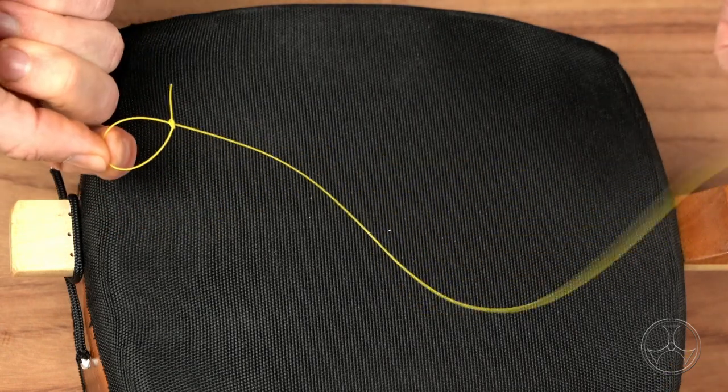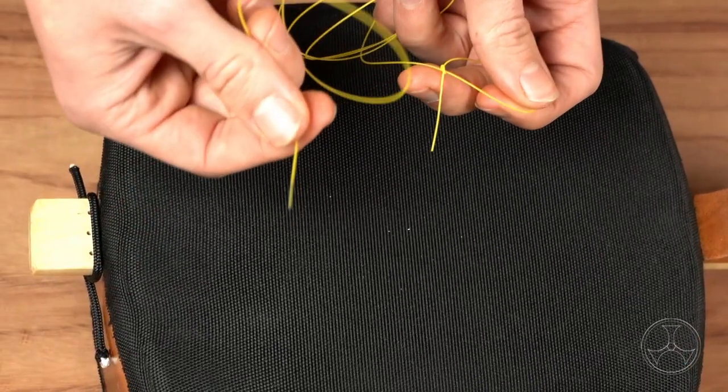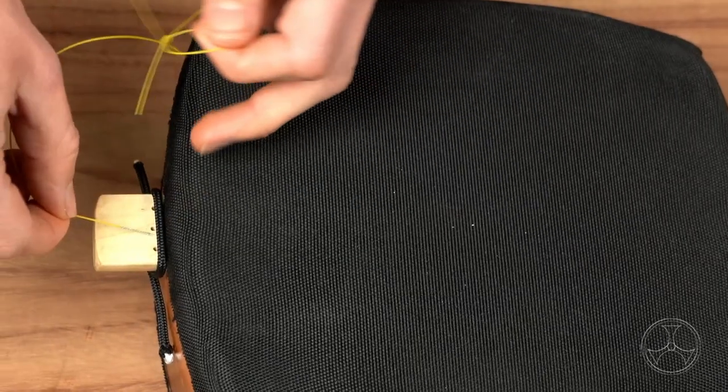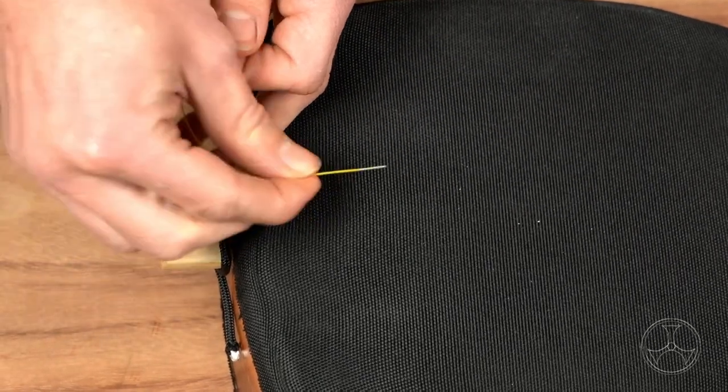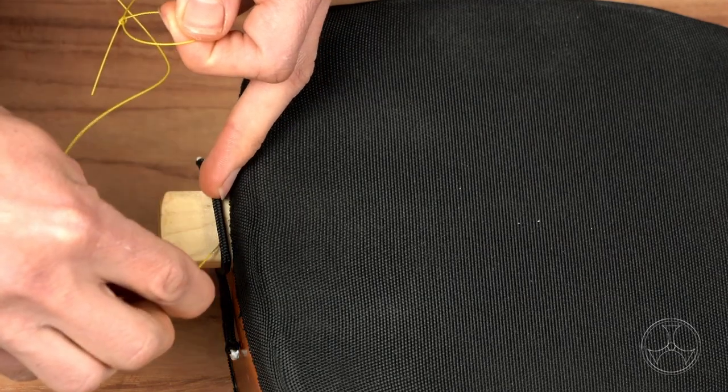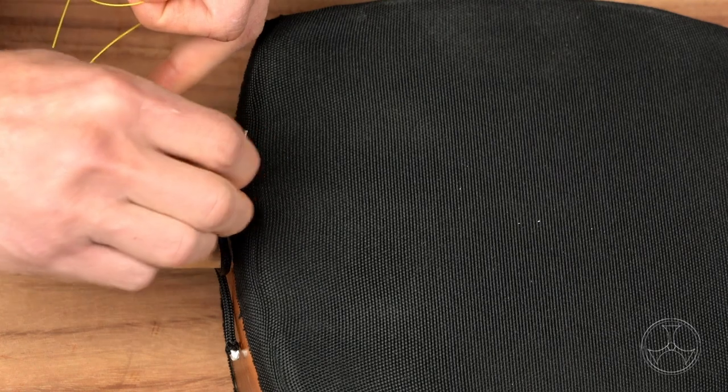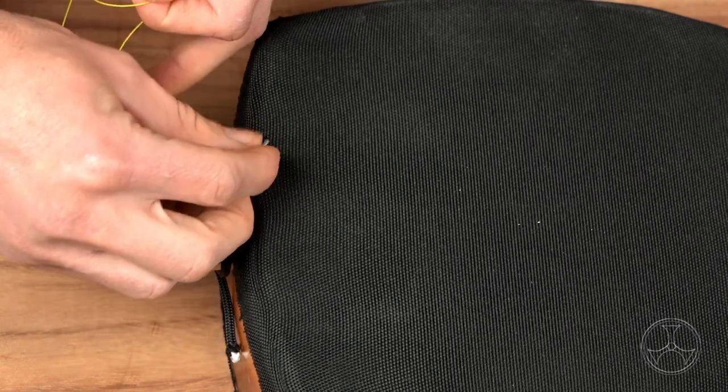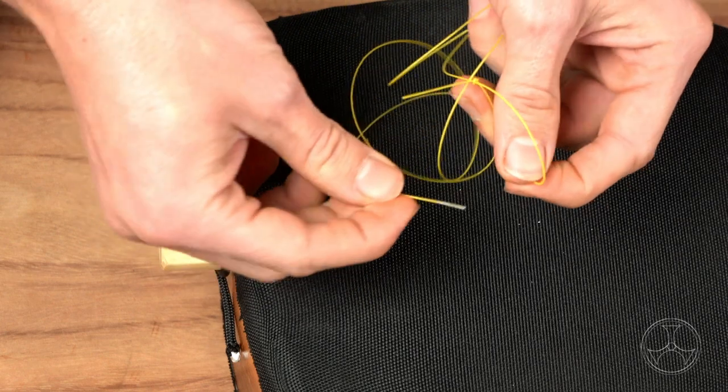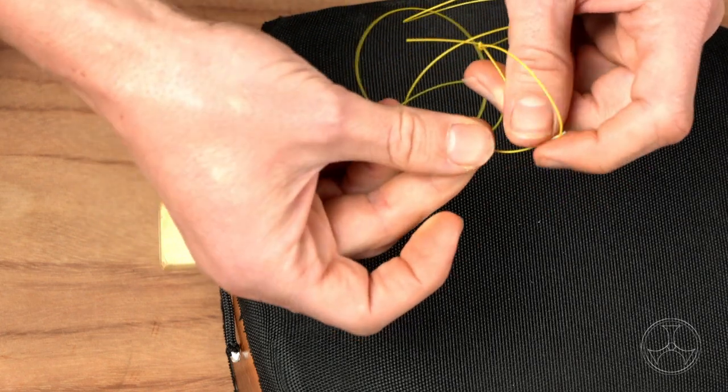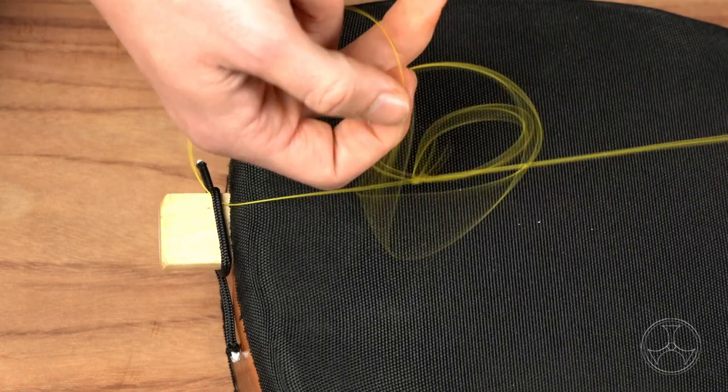At this stage, we'll hold the loop here. Then we'll take the other end here. This end will feed through the tail piece going out and in. Now we'll put this end through the loop we made with the slip knot.